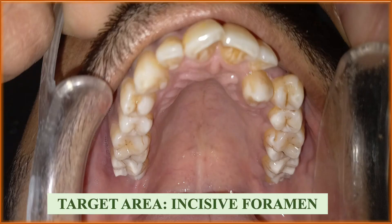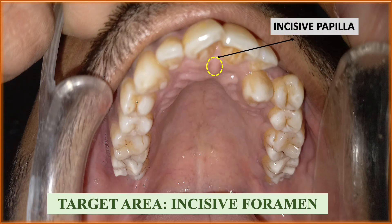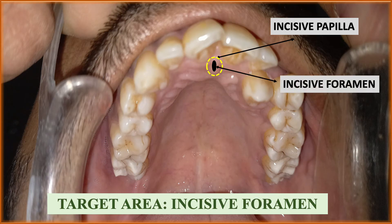The area of insertion is the incisive papilla, which is an oval-shaped structure. The target area is the incisive foramen. The incisive foramen is beneath the incisive papilla — the incisive papilla sits over the incisive foramen. This is where we deposit the solution, and through this foramen the nasopalatine nerves and vessels emerge.